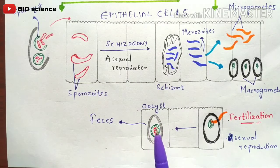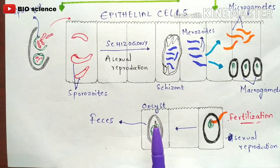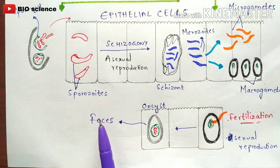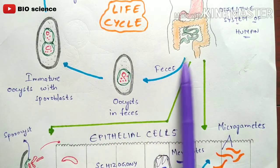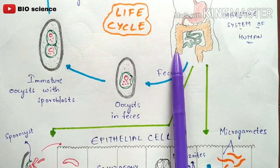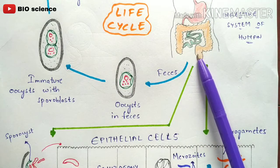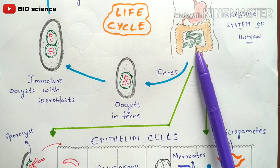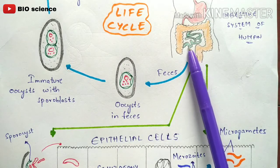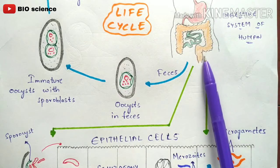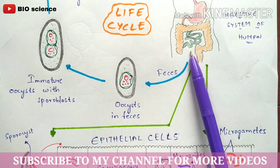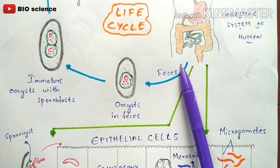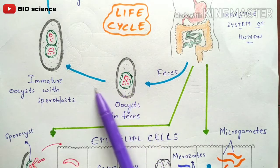It is called an immature oocyst because the sporocysts are not yet present. This immature oocyst is then released from the human being through fecal material. Once released, the total life cycle repeats. In summary, inside the epithelial cells of the human digestive system, both asexual reproduction (schizogony) and sexual reproduction (fertilization) occur, resulting in the development of an immature oocyst which is then excreted in feces.